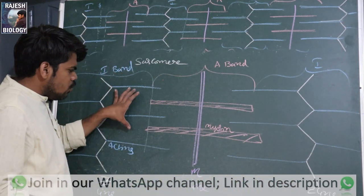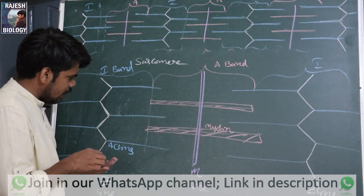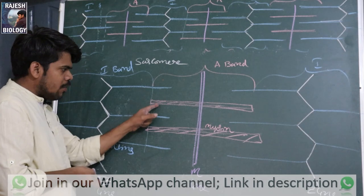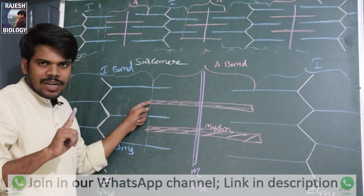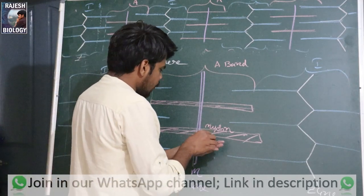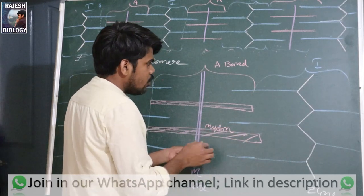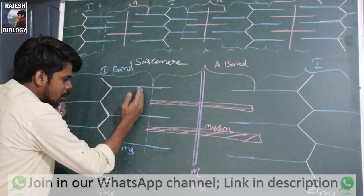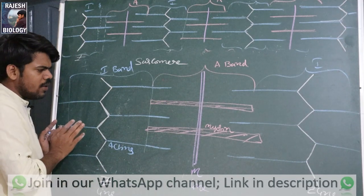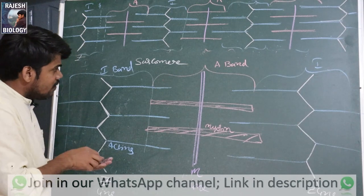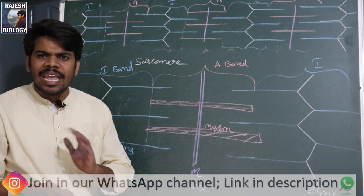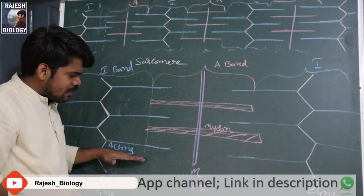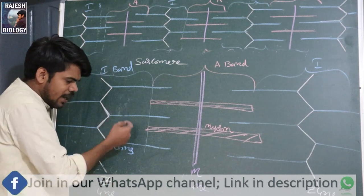Between two Z-lines is the sarcomere structure. Within the A-band, actin is also present, but myosin is not present in the I-band. So the A-band has both actin and myosin, while the I-band has only actin — the Z-line is also there. The I-band abbreviation stands for isotropic and the A-band for anisotropic — when light passes through the slide, thin filaments allow the light, thick filaments do not.